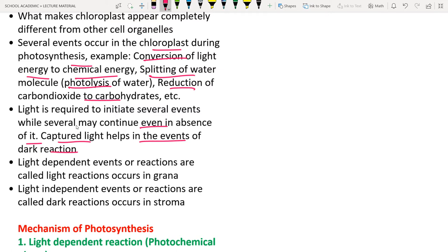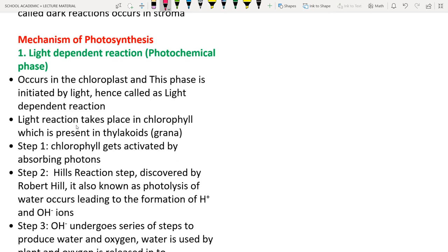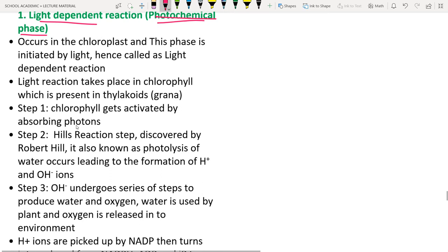The mechanism of photosynthesis involves light-dependent and light-independent reactions. Light-dependent reactions are also called the photochemical phase — 'photo' means light. They occur in the chloroplast's thylakoid membranes (grana) and are initiated by light.